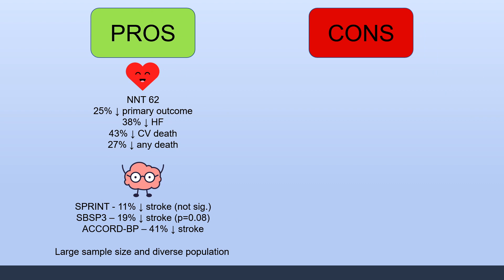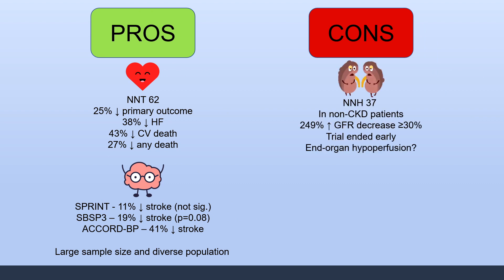What are some cons of this study? The renal outcome showed a number needed to harm of 37 in non-CKD patients, representing a 249% increase in the risk of GFR decline. Additionally, the trial ended early, raising the possibility that some adverse renal outcomes may not have been captured. There is also general concern for end-organ hypoperfusion in patients treated to a lower blood pressure target, and the SPRINT trial did not provide strong evidence against that concern.